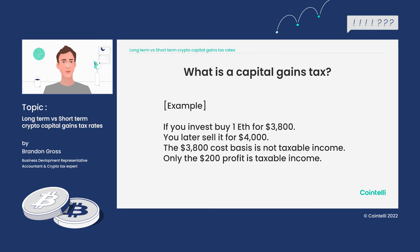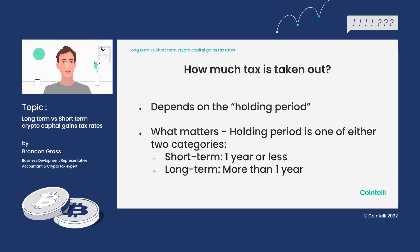That leads to one of the big questions: how much tax is taken out exactly? That depends on the holding period. For our purposes, it's going to be one of two categories: either short-term, which is a year or less, or long-term, meaning you've held onto your asset for more than one year.